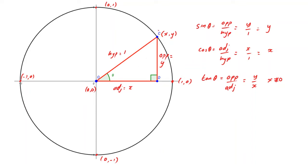We're going to drag point C around the edge of the circle in both directions, collecting angles from 0 up to 360 degrees. As we drag C counterclockwise, the angle at the centre increases. It starts at 0 when C is at (1, 0), reaches 90 degrees, then 180, 270 degrees at the bottom, and 360 degrees — the same as 0 — when it gets back to (1, 0). We'll then have a demonstration of how to collect and record that information.